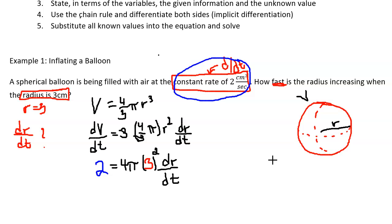Simplify that down and isolate the dr/dt. So we have got 2 equals 36 pi dr/dt which means that dr/dt is equal to 2 over 36 pi or 1 over 18 pi.